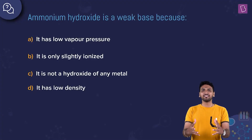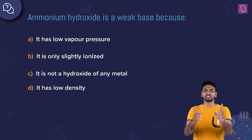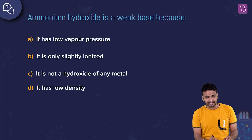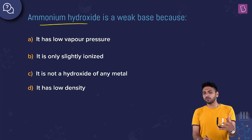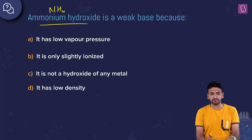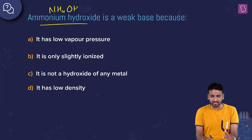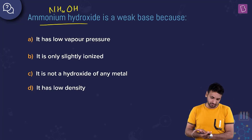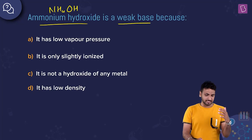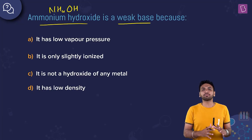Here we have a question based on the strength of bases. Ammonium hydroxide — the formula is NH4OH — is a weak base. We have four options. Before jumping to the options, let's understand the idea behind the strength of bases.